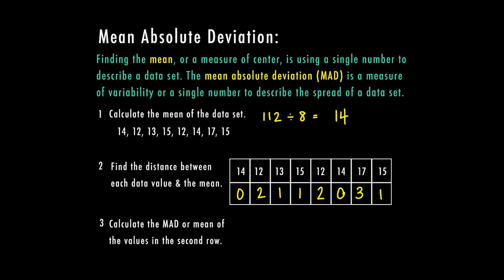So now once we've found the distance between each data value and the mean we can calculate the MAD or the mean of the values in the second row. We're going to add up all of those numbers that we just found as the distance or the absolute between the two. When I add all these up I end up with 10. Then I'm going to divide by 8 because there are 8 of them. So here I am finding the mean of the absolute values and this is going to be my deviation. 10 divided by 8 is 1.25 or one and a quarter.